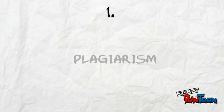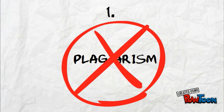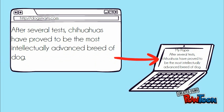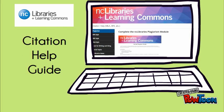Why should you cite? Citing your sources is an essential piece of the research process for two very important reasons. First, citing your sources is essential to avoiding plagiarism in your work. What is plagiarism? Basically, it's passing off someone else's work or ideas as your own. Check out the Niagara College Library's Citation Help Guide to learn more about different types of plagiarism and find some useful tools.